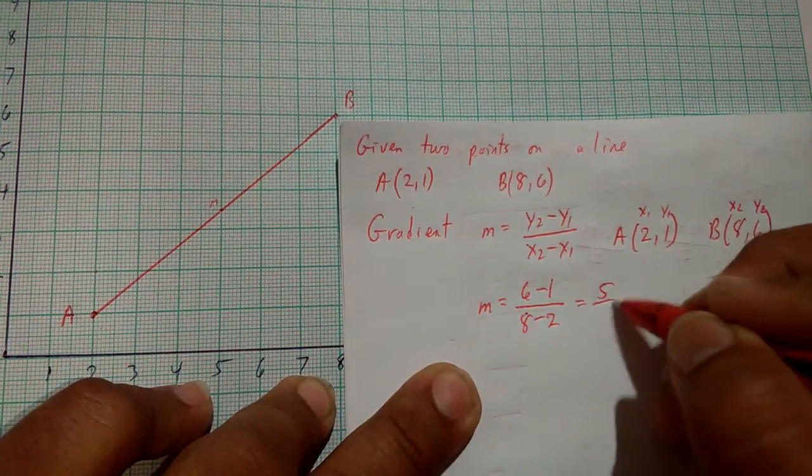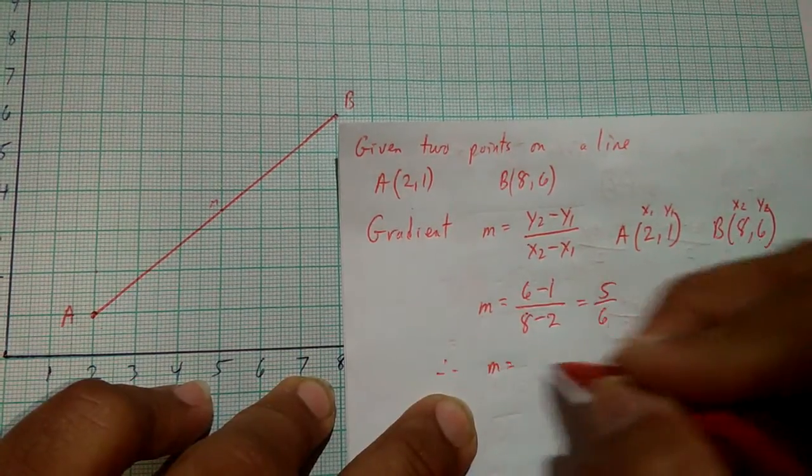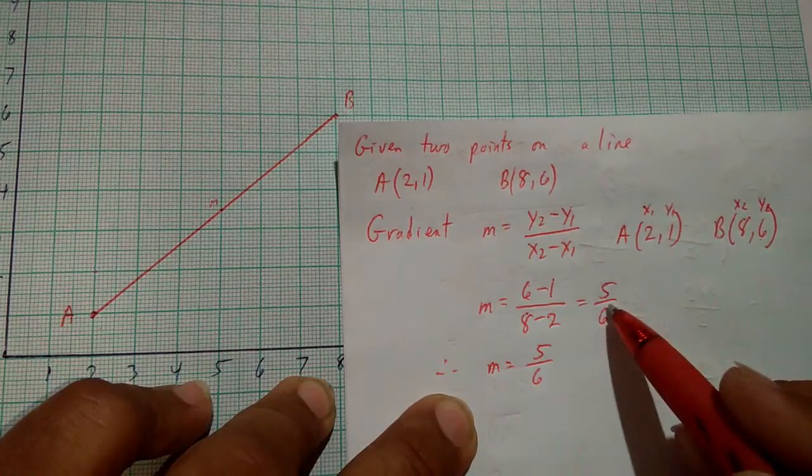This gives us a value of 5 over 6. Therefore, m, which is our gradient, equals 5 over 6.